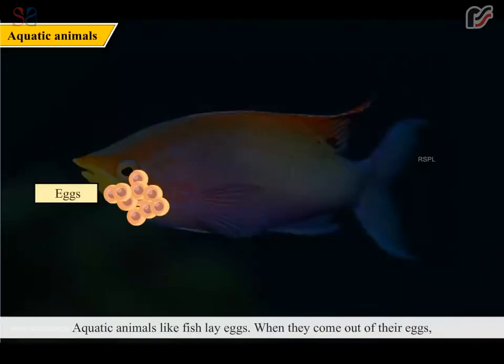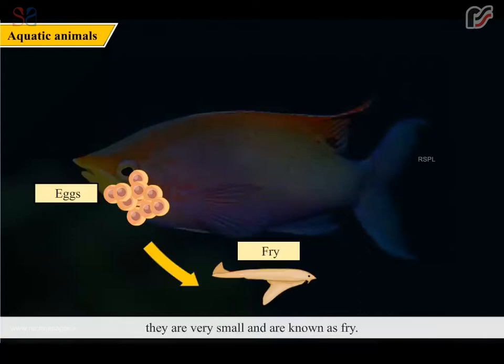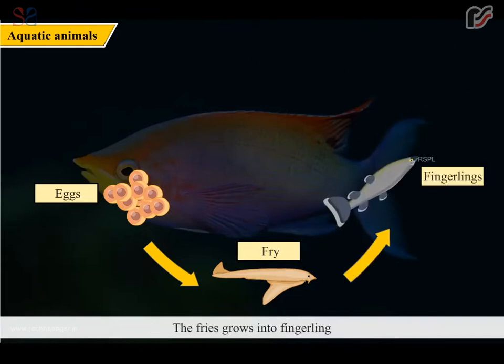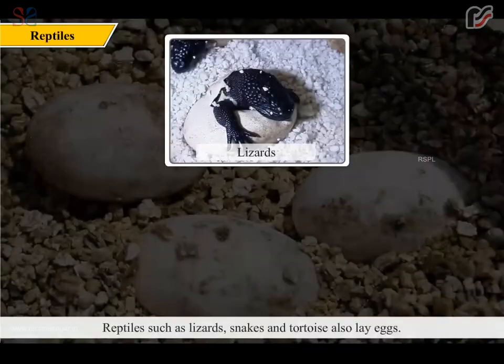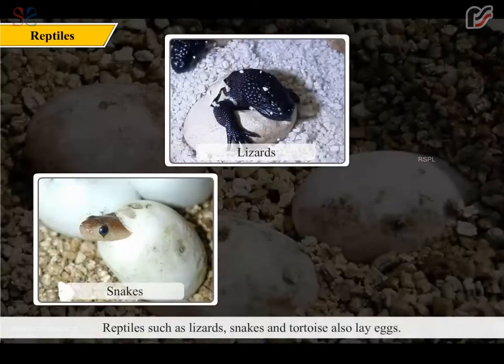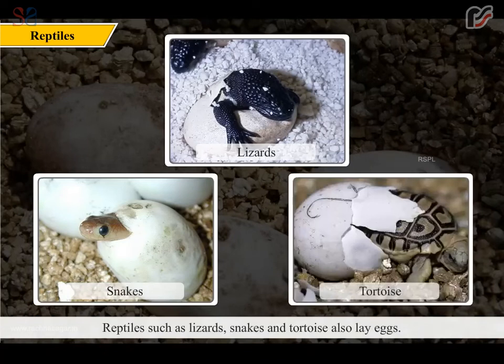Aquatic animals like fish also lay eggs. When they come out of their eggs, they are very small and are known as fry. The fry grows into fingerlings, which further grow to become adult fish. Reptiles such as lizards, snakes and tortoises also lay eggs. These eggs are hatched by the warmth of the sun.